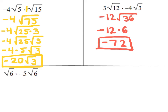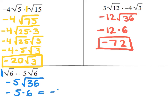Pause the video and try the one at the bottom on your own. If I multiply this one, there's really a 1 in front of the first square root of 6. So 1 times negative 5 becomes negative 5, and square root of 6 times square root of 6 becomes square root of 36. Notice that multiplying the square root of 6 by itself means they cancel out. The square root of 36 is 6, so it becomes negative 5 times 6, which gives negative 30. As we saw with the examples, it's possible to get whole numbers from multiplying radicals after you simplify.